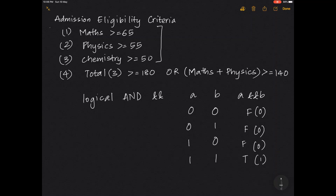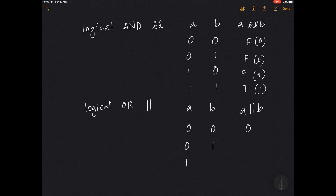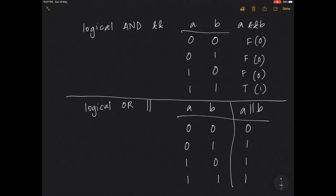Moving on to logical OR, which is represented by two pipeline operators (||). The pipeline operator is the key usually found below the backspace button — press Shift and that key to get the pipeline operator. For the logical OR truth table: if both are false the answer is false, but if any one is true the answer is true, and if both are true the answer is also true.